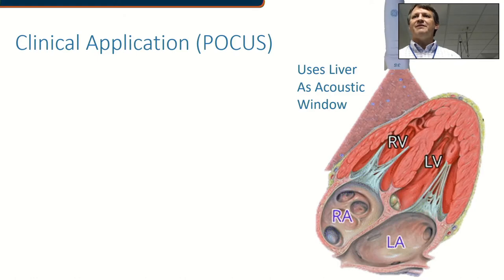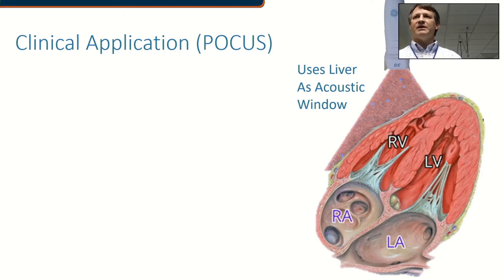What's the application for sub-xiphoid or sub-costal views? In this particular view, the probe touches the skin either in the midline — which is why it's called a sub-xiphoid view — or slightly off midline but under the costal margin, which is why it's called a sub-costal view. In either case, it uses the liver as an acoustic window, getting an oblique view of the four chambers of the heart so you can assess all four chamber functions.